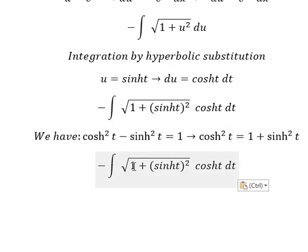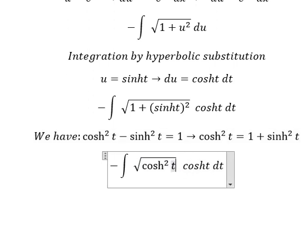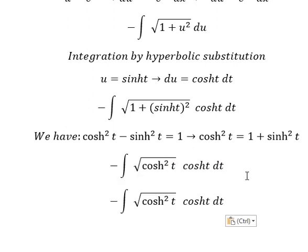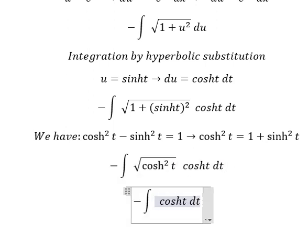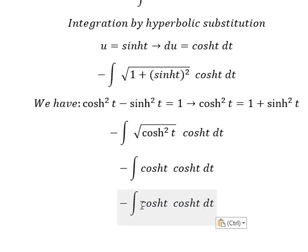So one plus sinh(t) squared equals cosh(t) squared. The square root of cosh(t) squared is cosh(t). So cosh(t) times cosh(t) gives us cosh(t) squared.